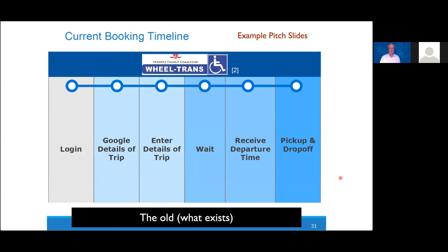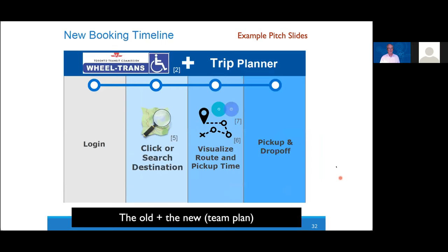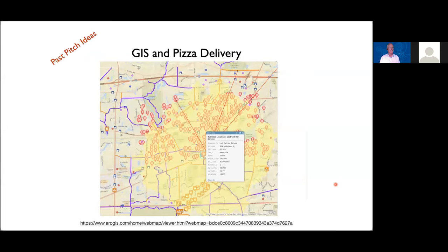Once they got into the pitch, they focused first on what's already out there—what TTC currently offers—showing a somewhat complicated process in very concrete terms. Then the next slide showed what their trip planner would bring: simplifying it to a four-step process. The team included only a couple of additional slides, not much more. One thing to pay attention to is that you don't have much time with the pitch, so be very selective in designing a few slides that will give you maximum output.